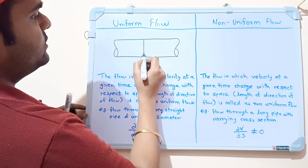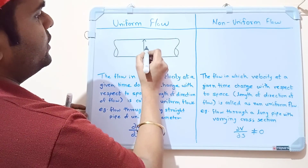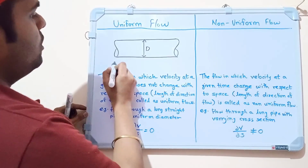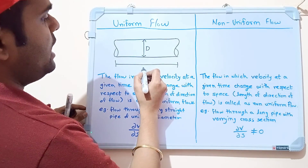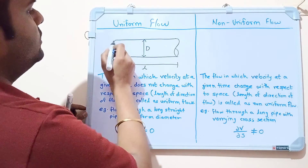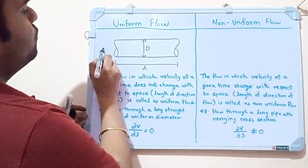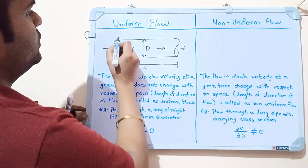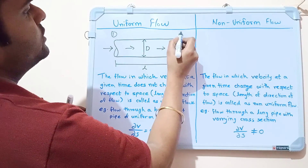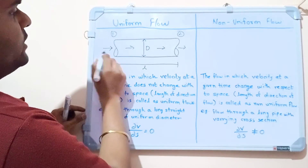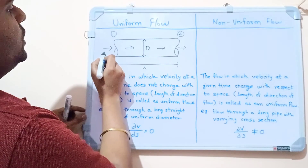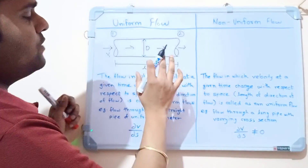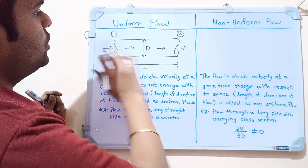This pipe has diameter d, and the diameter is the same throughout the length. Suppose this is our length L. In this pipe, fluid is flowing from one direction to the other. This is one point and this is the second point. Initially, the velocity at the entrance of the pipe is v1.